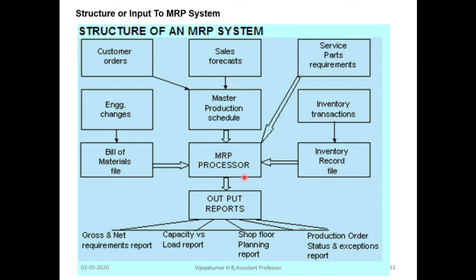From the MRP processor, the system generates output reports including: gross and net requirements of products, capacity versus load reports, shop floor planning reports, production order status, and exceptions report.